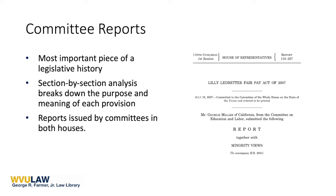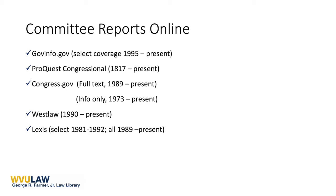Committee reports are numbered separately for the House and the Senate, starting with the number of the Congress that issued the report, a hyphen, and then the chronological number of the report in that session of Congress. The example shown here is a report from the Committee on Education and Labor submitted in response to deliberations on the Lilly Ledbetter Fair Pay Act. In the top right corner, you see the report is numbered 110-237, meaning this is the 237th report from the 110th Congress, styled as HR 110-237. Committee reports may be found at congress.gov, govinfo.gov, ProQuest Congressional, Westlaw, and Lexis.